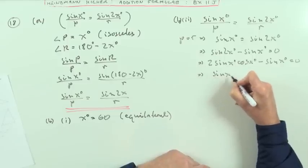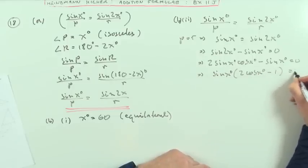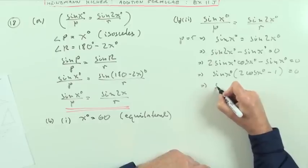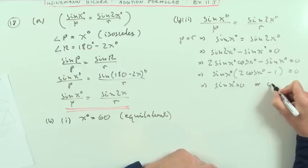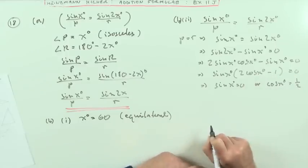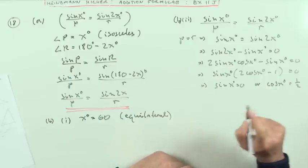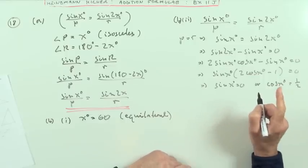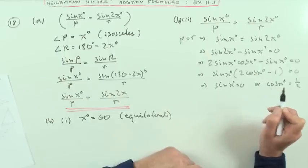Factorize it, take out the sine X, leaves you 2 cos X minus 1 equals 0, which means that either sine X equals 0, or if that bracket is equal to 0, cos X equals the opposite divided by the multiplying number, cos X equals 1/2. Now they've got a variety of answers, but you know that in the triangle, the angles are acute.